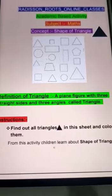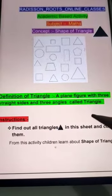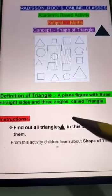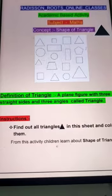Okay, what is the definition of triangle? Definition of triangle: a plane figure with three straight sides and three angles called triangle.